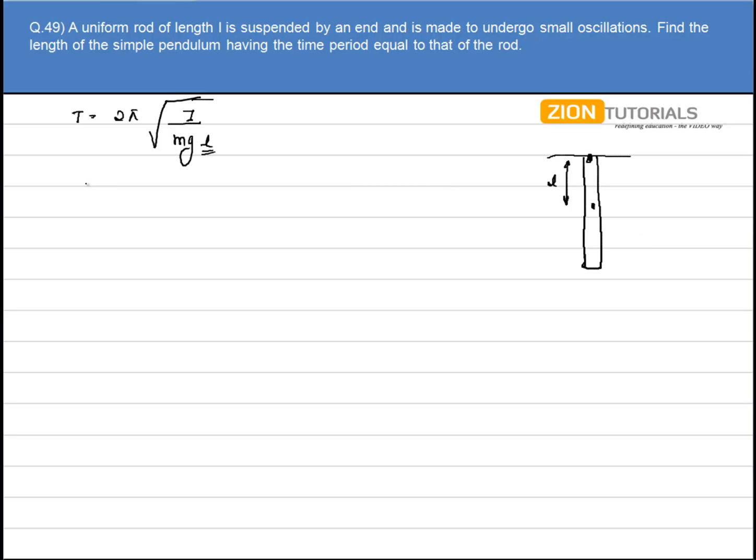Now what I have to do is calculate the moment of inertia of the body or of the rod about the point of pivot. Let's say O is the point of pivot.